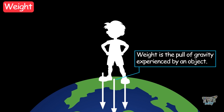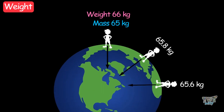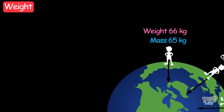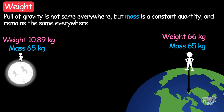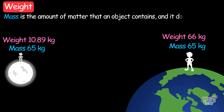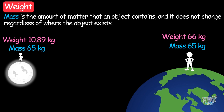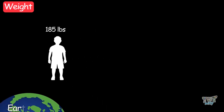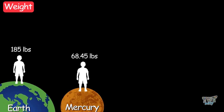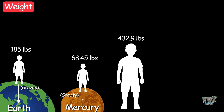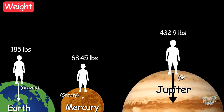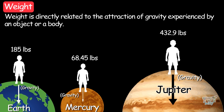Weight is the pull of gravity experienced by an object, which is why it differs in different places on the earth or beyond. The pull of gravity is not the same everywhere, but mass is a constant quantity and remains the same everywhere. For example, if a person weighs 185 pounds on earth, they would weigh 60.45 pounds on Mercury, because the attraction of gravity is less there. The same person would weigh 432.9 pounds on Jupiter, because the force of gravity is greater there. So weight is directly related to the attraction of gravity experienced by an object.